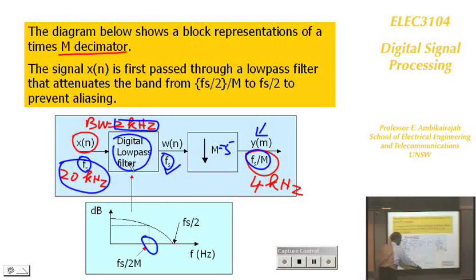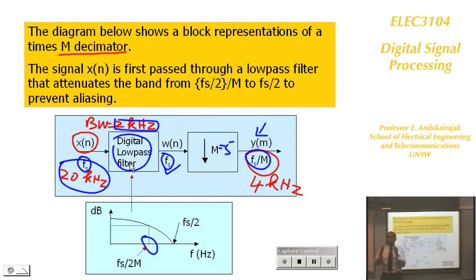In summary: if you have a signal coming in at one sampling rate and want an output at a different sampling rate, you must have a low-pass filter first which filters the signal, and then a downsampler. That is the diagram you need to follow.